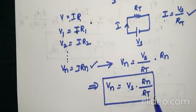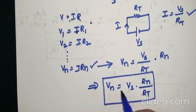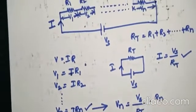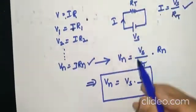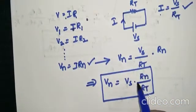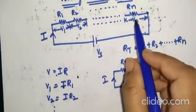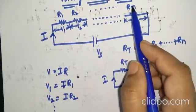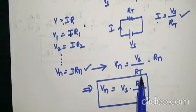So, Rn by Rt. In words, voltage across the nth element is equal to the voltage source times that particular resistance Rn divided by total resistance Rt.